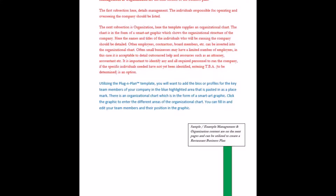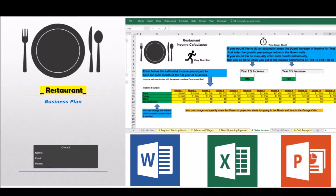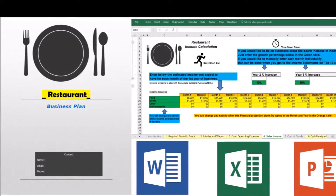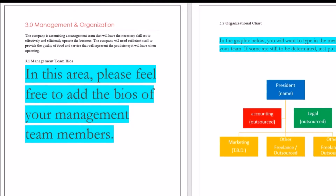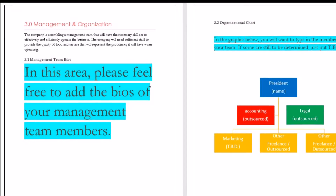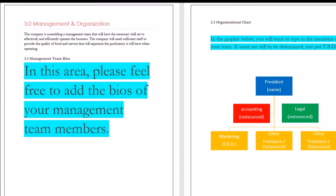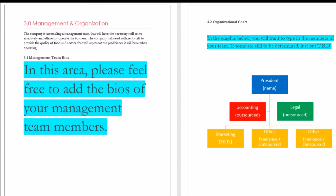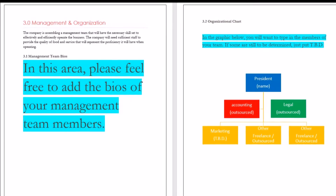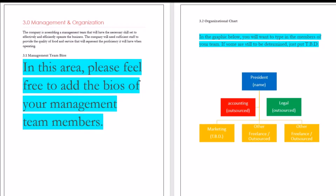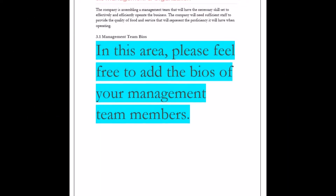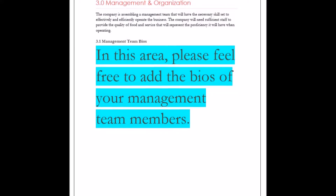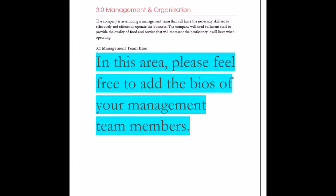The next subsection is organization. Here is where an organizational chart is detailed. The chart is typically in the form of a graphic which shows the organizational structure of the company. The names and titles of the individuals who will be running the company should be detailed. Other employees, contractors, board members, etc. can be inserted into the organizational chart.